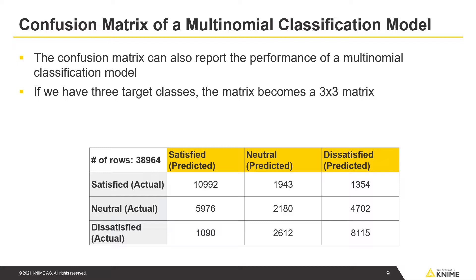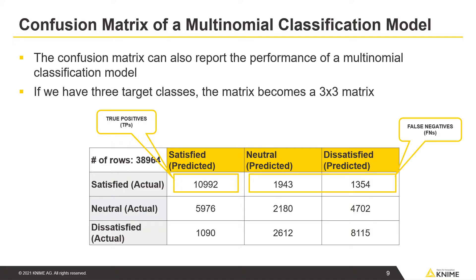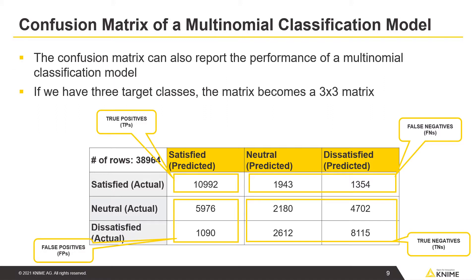One of the target classes is defined again as the positive class, but now the remaining classes define the negative class together. As before, we define satisfied as the positive class. Neutral and dissatisfied define the negative class. Here in this cell, you can find the true positives. For the other counts, we need to sum up the numbers for the two negative classes: these numbers represent false negatives, these false positives, and these true negatives.